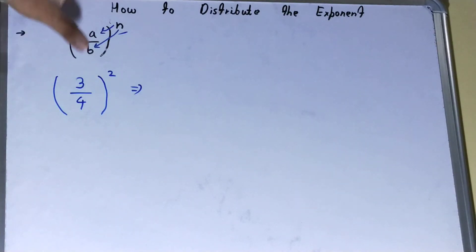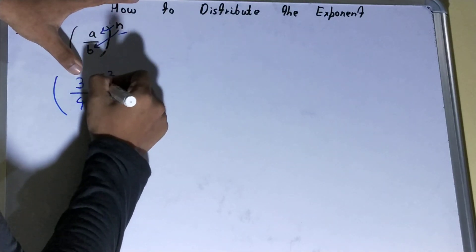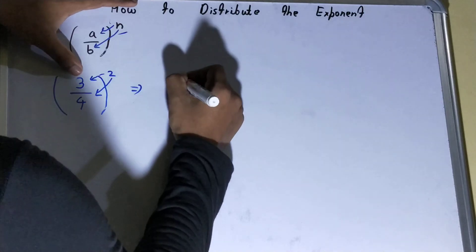According to the rule, what we'll do is we'll distribute this exponent among both the terms. So it will be 3 raised to power 2 upon 4 raised to power 2.